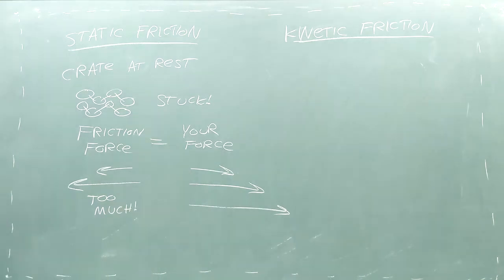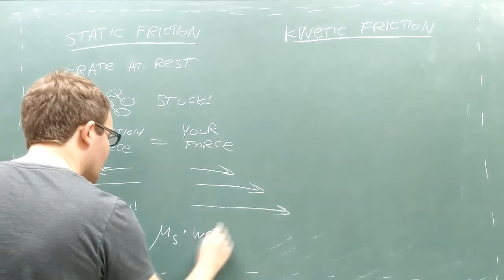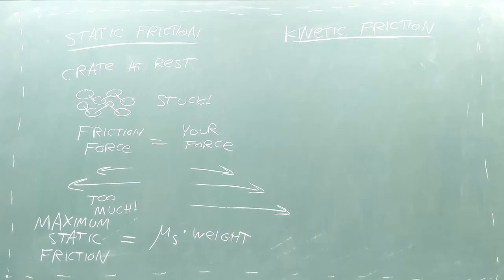This is because static friction has a maximum value at which the crate breaks free. This maximum value depends on two things: the stickiness between the atoms and the force between the crate and the floor. The stickiness is measured in a number called the coefficient of static friction, represented by the Greek letter μ (mu).